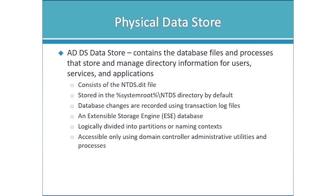Changes are actually made in memory, but the problem with making changes in memory is that if you lose power you lose those changes. So simultaneously, when changes are written into memory, they're also written into transaction log files which then commit the changes into the database and provide a recovery mechanism should you lose power. This is an Extensible Storage Engine — ESE — database, which is a standard type of database for many Microsoft products. Even though it's a single physical file, it is logically divided into partitions, also called naming contexts. This database is accessible only using domain controller administrative utilities and processes.